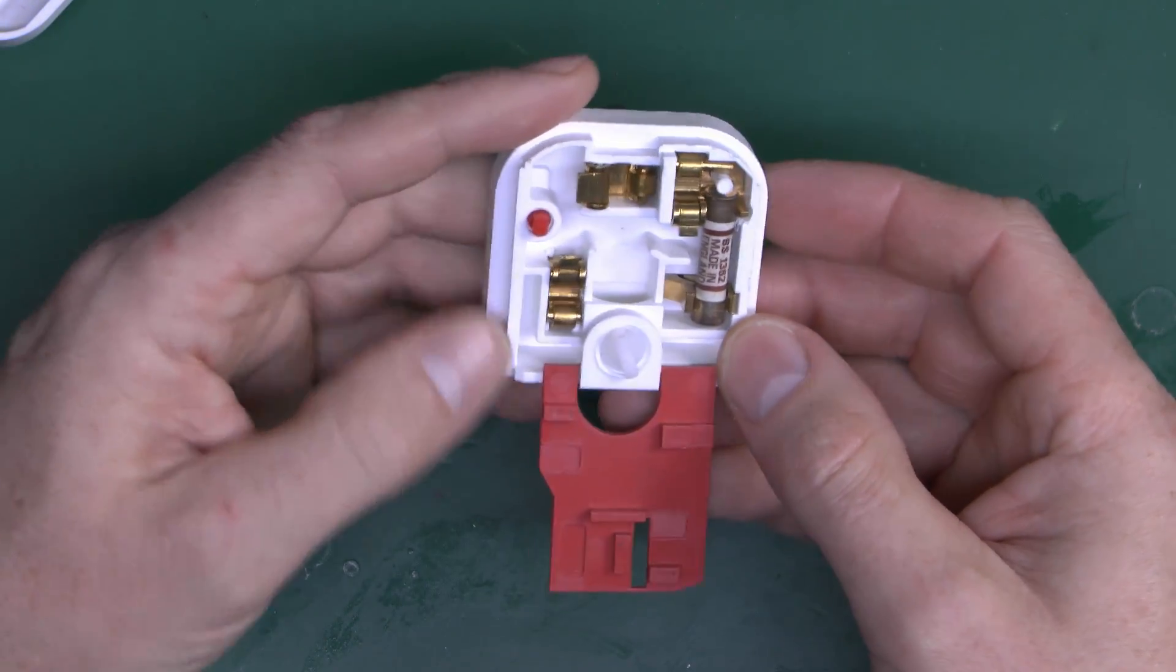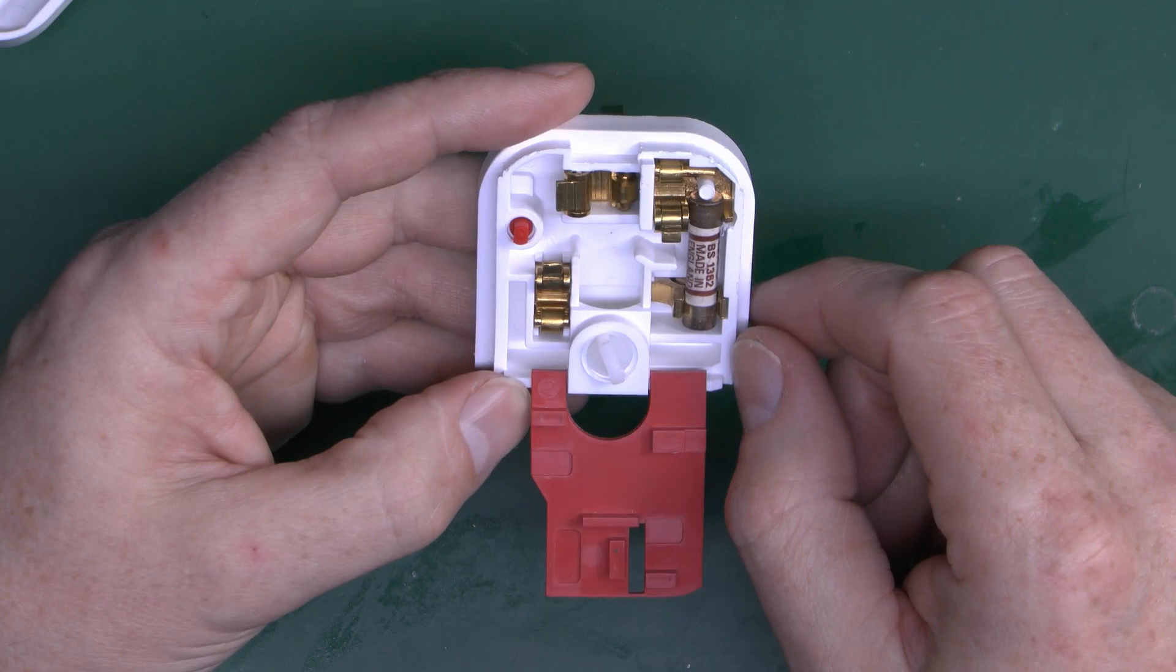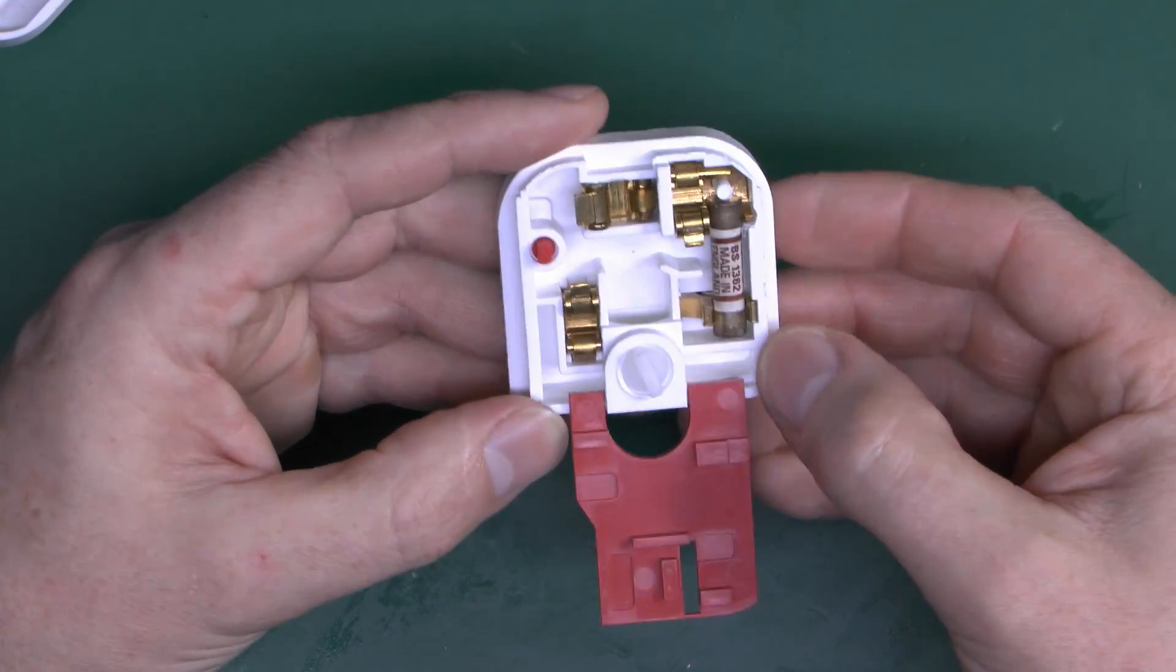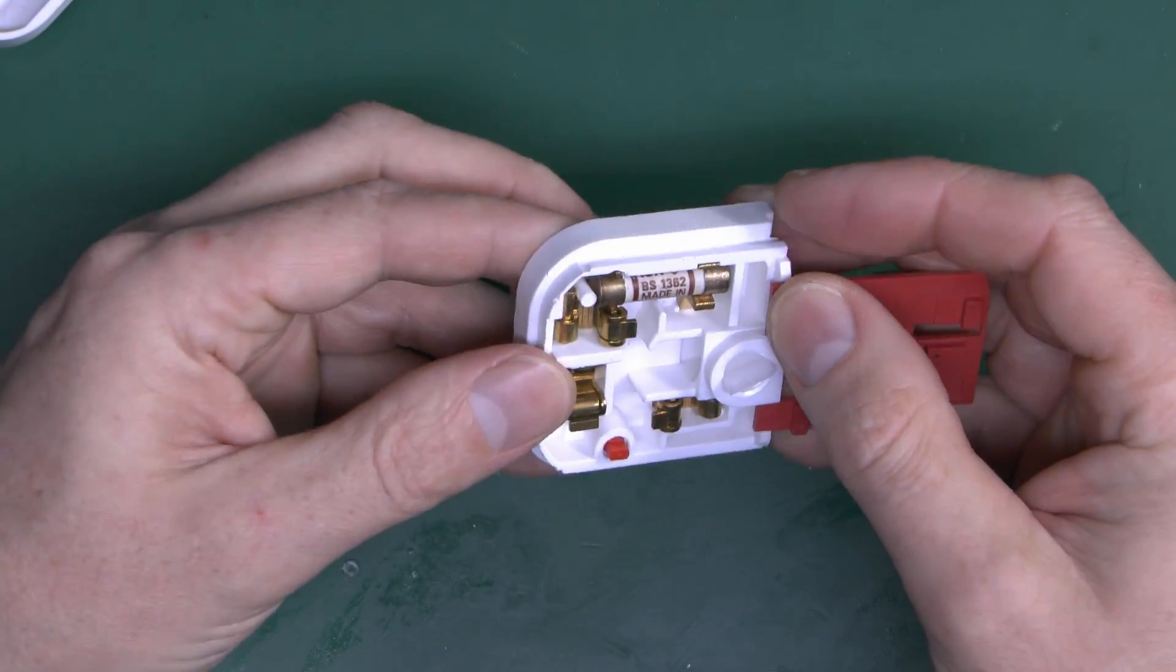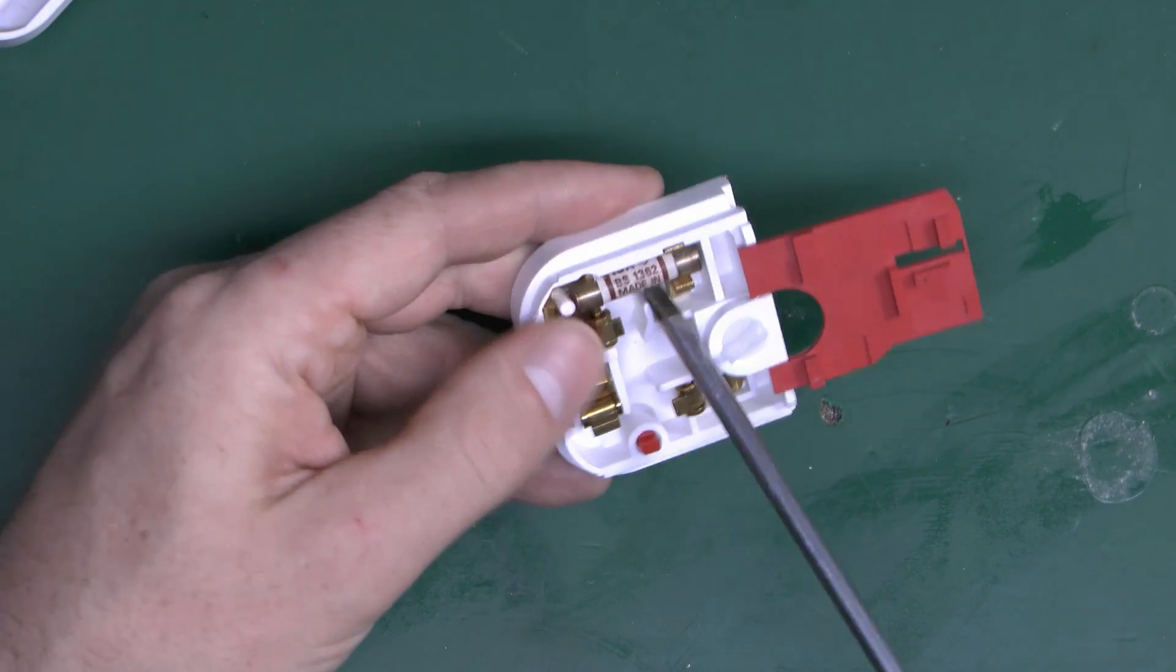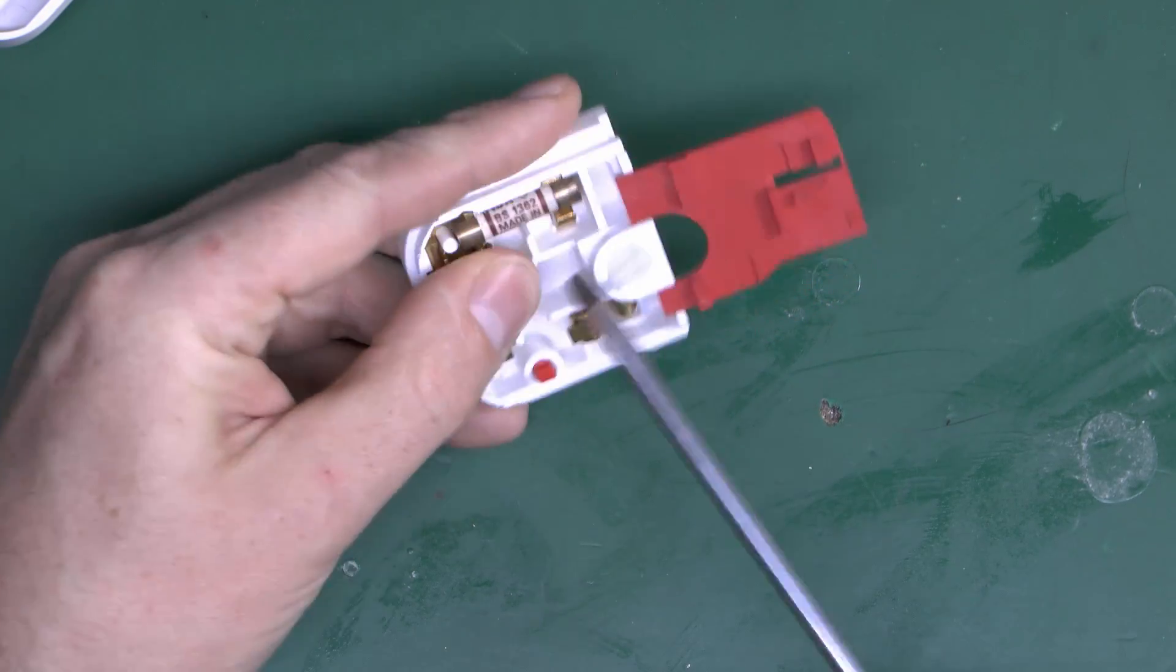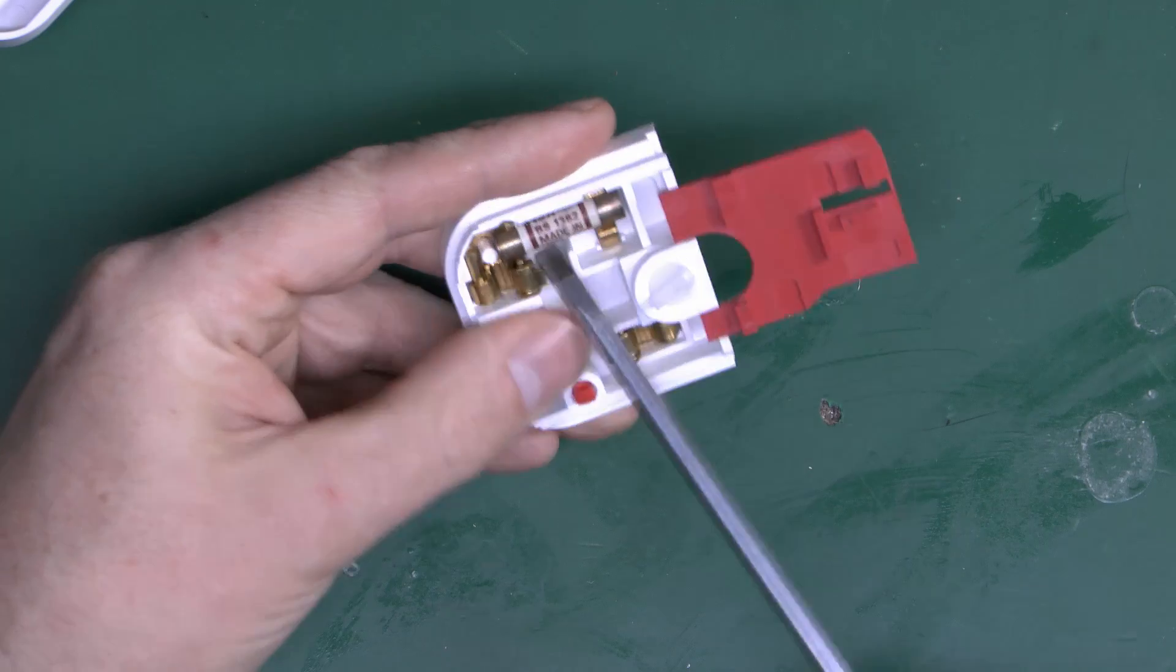And then we can see inside here, got the three connections there. This has a fuse inside already, as most of these of course do. This is a 13A, it would appear, from the brown coloring. Let's just ease that out of there, and we shall be able to find out.